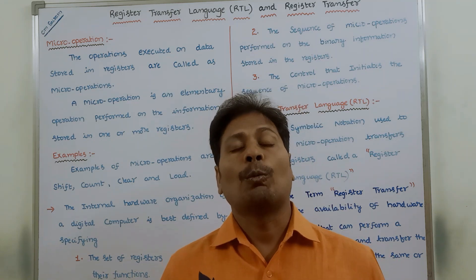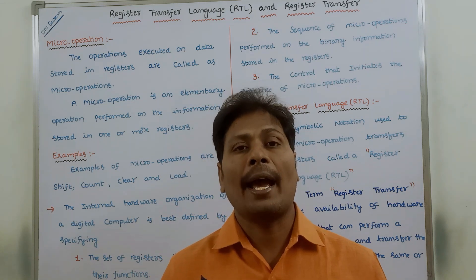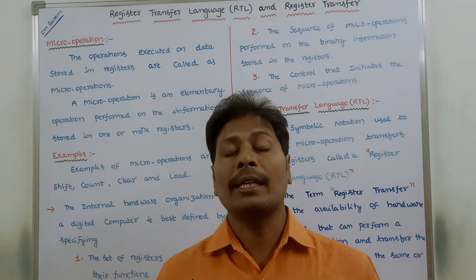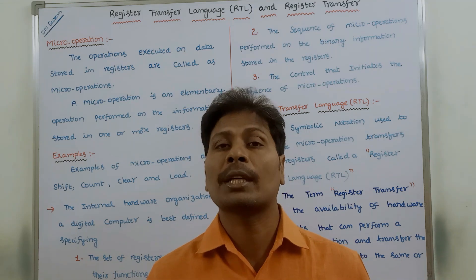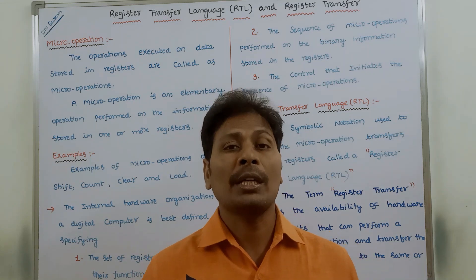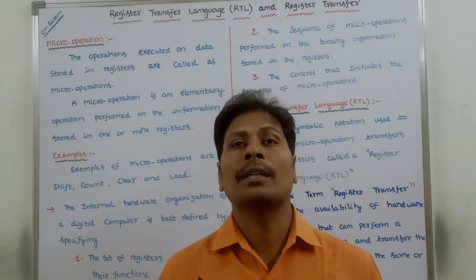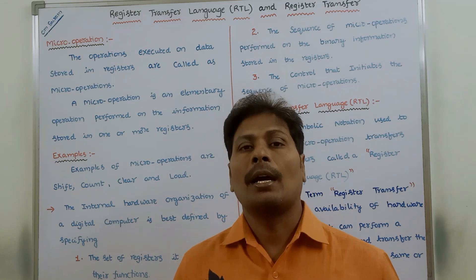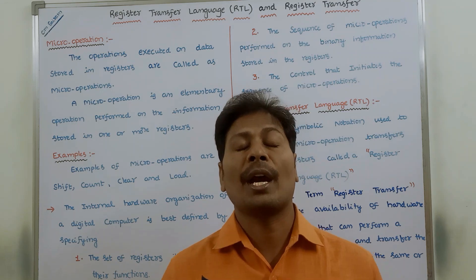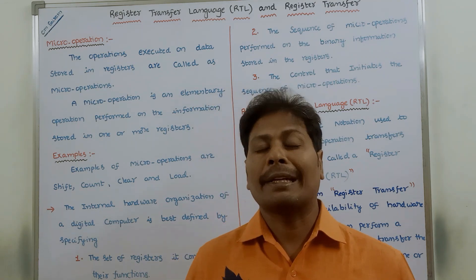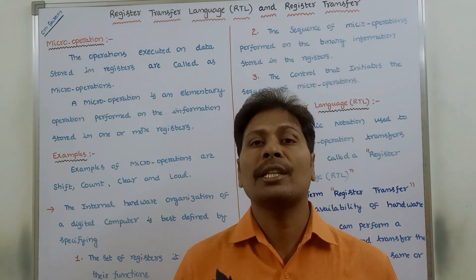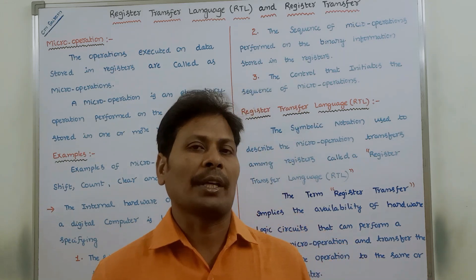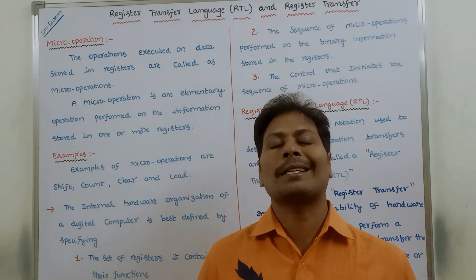The first one is what is micro operation? Second one is examples of micro operations. Third one is how can you say that the internal hardware organization of a digital computer is best? Fourth one, what is register transfer language? Fifth one, what is register and how can you represent the registers? Seventh one, what are the symbols we have to use in register transfer language? And eighth one, what is the hardware logic circuit we have to use to perform the register transfer?